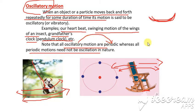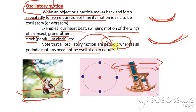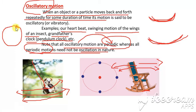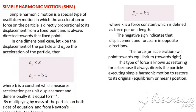Not all oscillatory motions are periodic, whereas all periodic motions need not be oscillatory. Oscillatory motion is periodic because it moves from one point to another and keeps repeating. However, not all periodic motion is oscillatory — for example, the movement of the Earth around the Sun is periodic but not oscillatory, because it is circular motion and not to and fro motion.